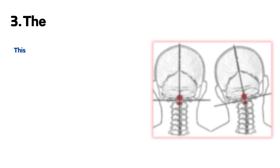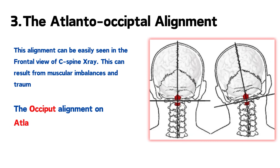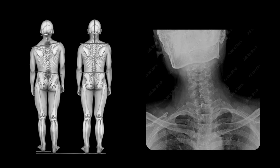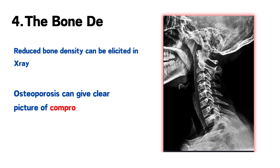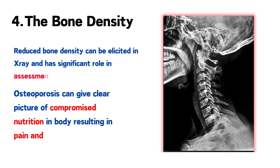Third is the occiput alignment on the atlas bone. This can be clearly seen in the frontal view of a cervical x-ray. Deviations seen in this can lead to overall body misalignment, as seen in the figure. Muscular imbalances or trauma can be the cause for this.